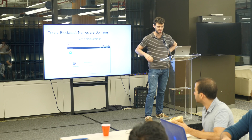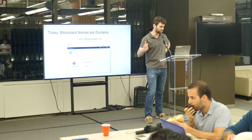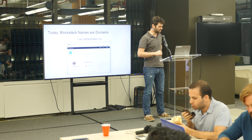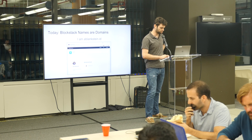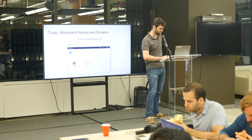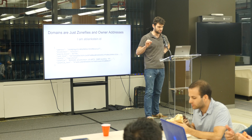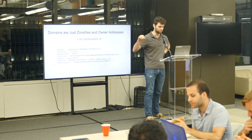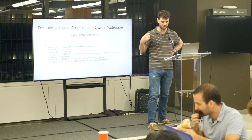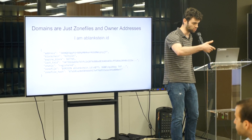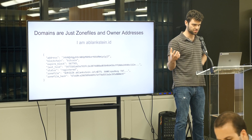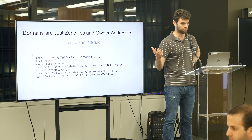Today, Blockstack names — if you go and register a name on the browser, that name will be a domain. So if I tell you that I am Blankstein.id and you go and look that up, you see a profile for me right there: Programmer and Blockstack Activist. However, domains are really just associated with a zone file and a particular owner. What the Blockstack browser does is a lookup that returns a big chunk of code, which has things like the actual owner address and a zone file. The zone file is just a string of information that tells the Blockstack browser how to resolve my name into that profile.